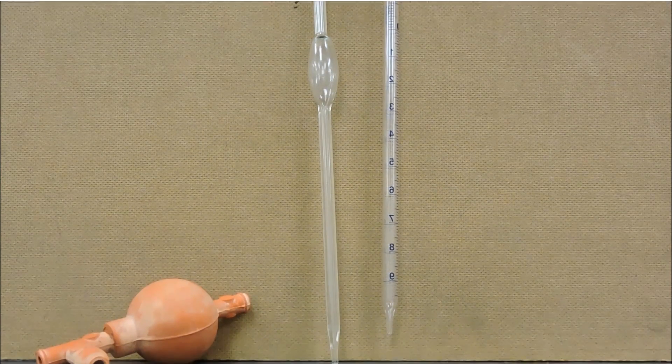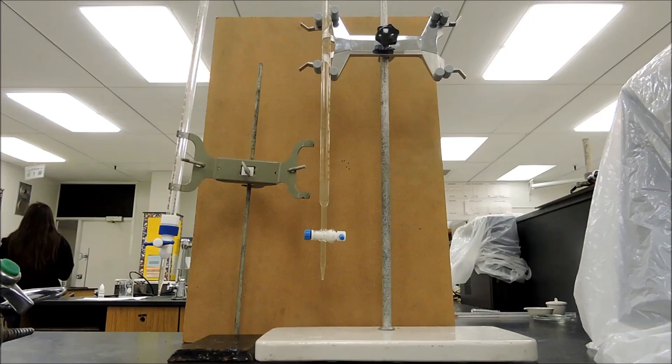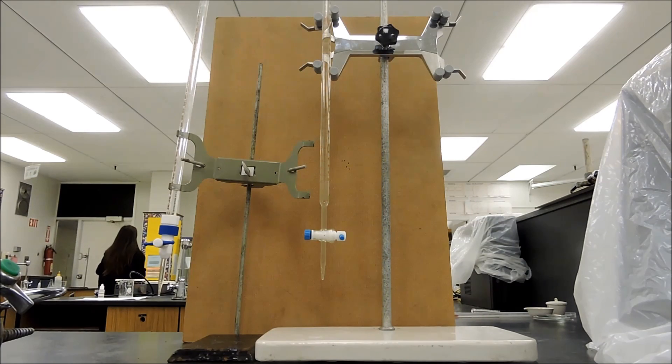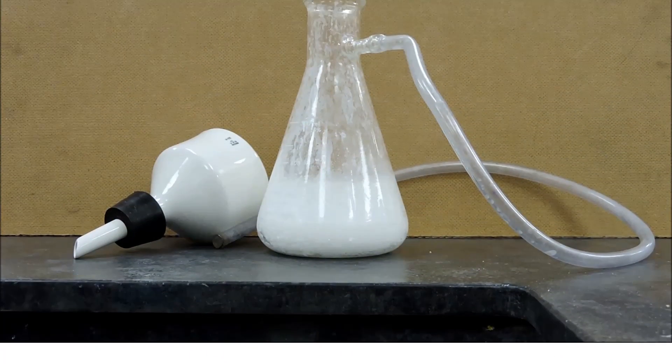These are burette clamps which hold up burettes. Burettes are the most accurate when it comes to measuring volume. You'll most likely use these in titration labs. The item to the right is the filter flask and the item to the left is the Buchner funnel.